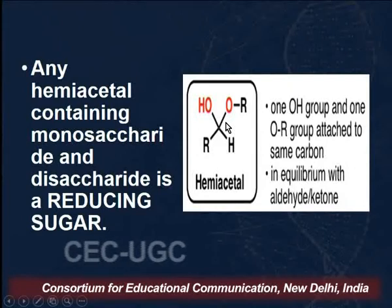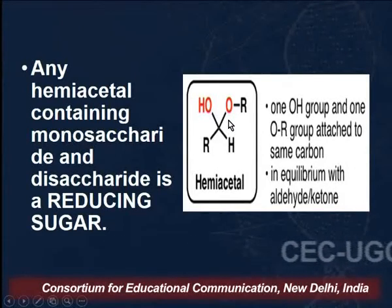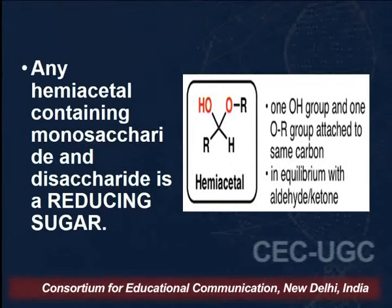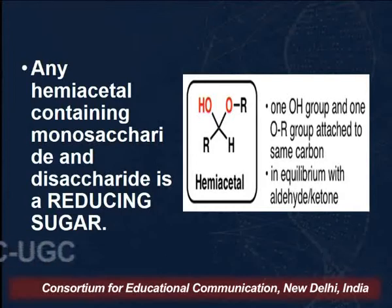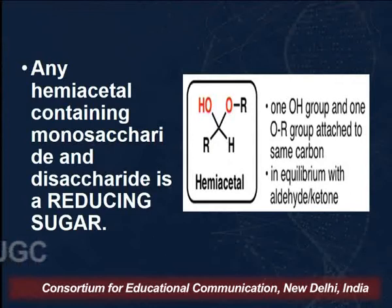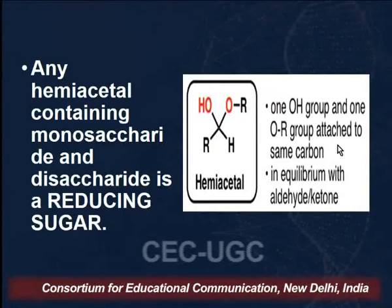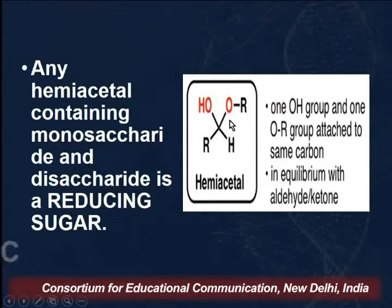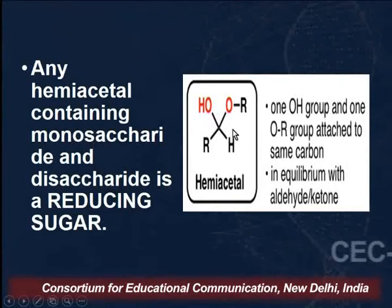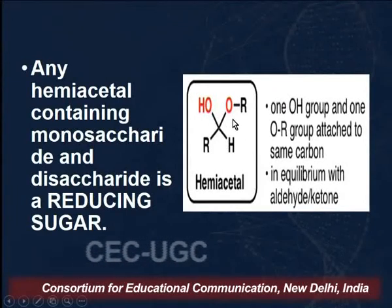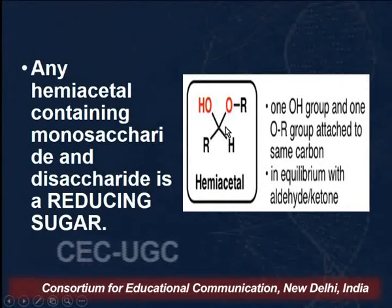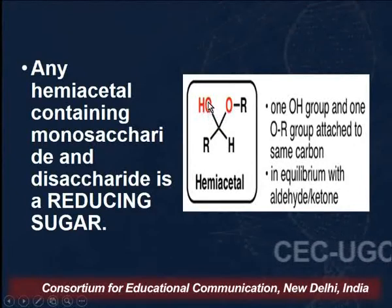If we are given a cyclic structure, we need to identify whether it is a hemiacetal. For any hemiacetal-containing monosaccharide or disaccharide, it will act as a reducing agent. What you have to look for is the anomeric carbon — that is, the carbon which was the carbonyl carbon, now converted into a hydroxy ether. That is carbon-1 in aldoses and carbon-2 in ketoses. In the ring structure, this carbon should exist as a hemiacetal, attached to a hydroxyl group, an ether group, and a hydrogen.